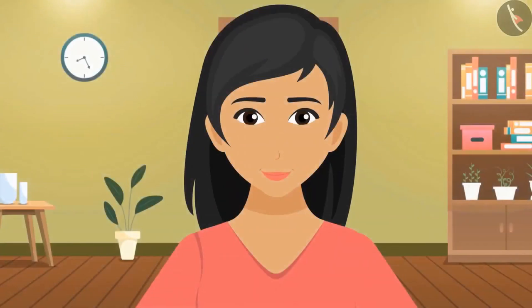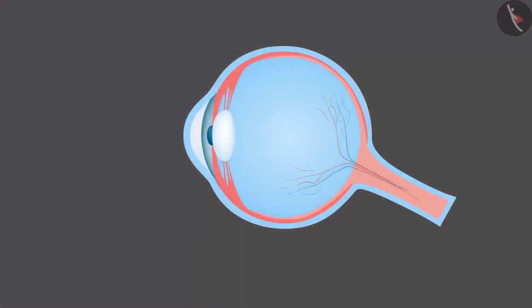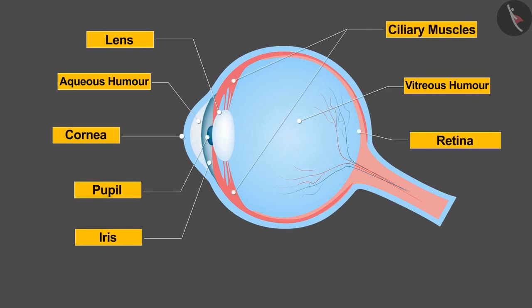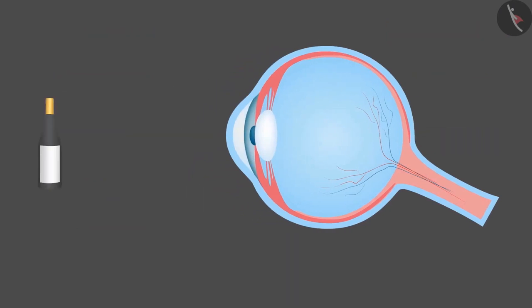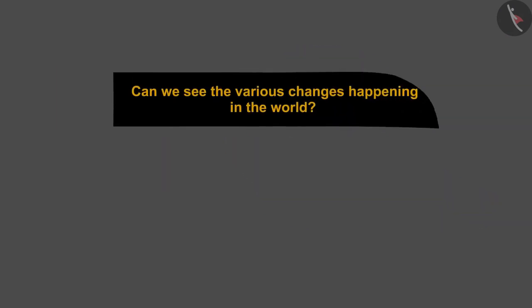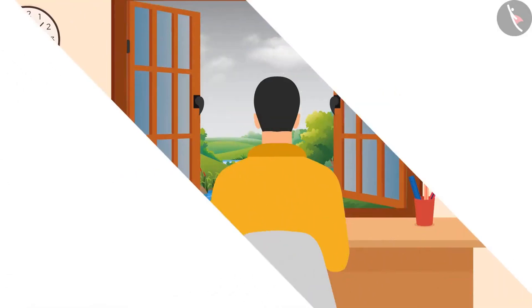We got to know about the parts of the eyes, the defects of vision and their corrections in our previous videos. We also discussed how sensitive and complicated our eyes are, and how we can see distant and nearby objects. But the question is, can we see the various changes happening in the world, or is there something that is not visible to our eyes?